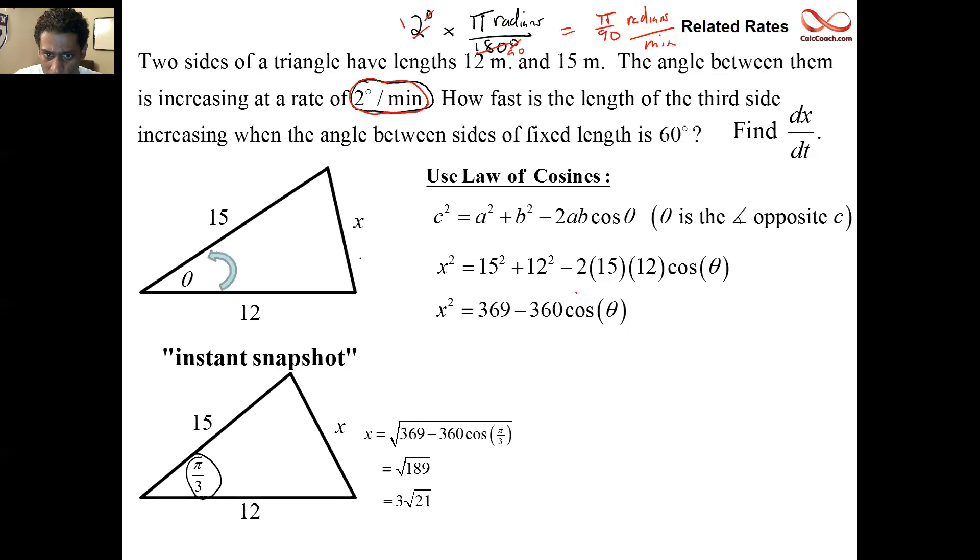All right. So, we go to this equation, and we take the derivative left to right. The derivative of x² is 2x. Derivative of 369 is zero. Derivative of cosine is a negative sine. And so, the negative in this negative 360 end up being positive 360 times the sine of theta. But remember now, each of these guys get a d variable dt, dx/dt on it, because they're changing with time. It's like a chain rule. dθ/dt on it, because it changes with time.